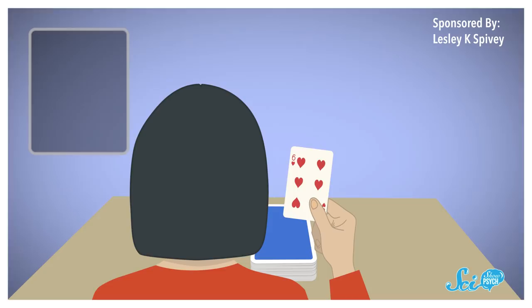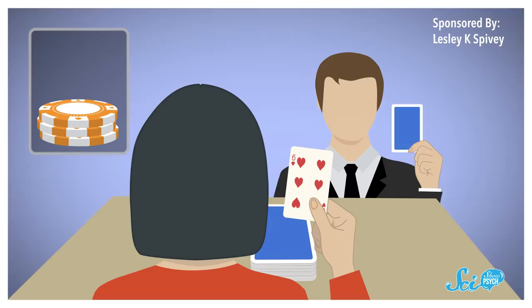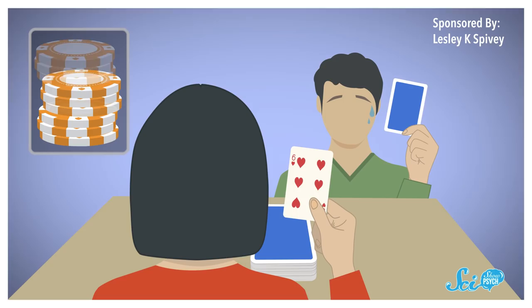When students were matched with a well-dressed, confident opponent who was in on the experiment, they bet less. And when they were matched with a shy, awkward person who also turned out to be an actor, they bet more. In both cases, everything was determined by chance. There was no way to affect the game. But participants acted as though they could.